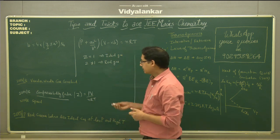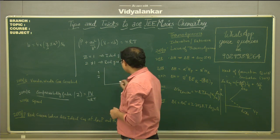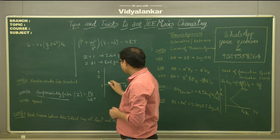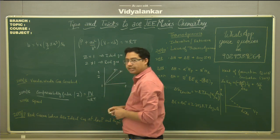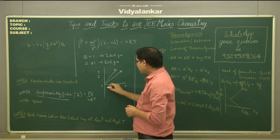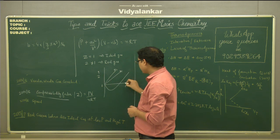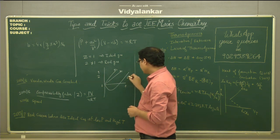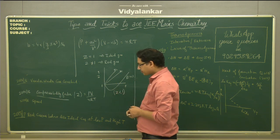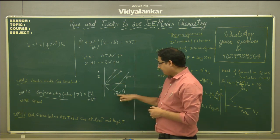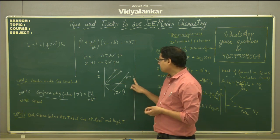We can have a Z versus pressure graph. For hydrogen and helium, Z is always greater than 1. For real gases, initially Z is less than 1, and then at high pressure Z is more than 1. At high pressure Z is more than 1; at low pressure Z is less than 1.